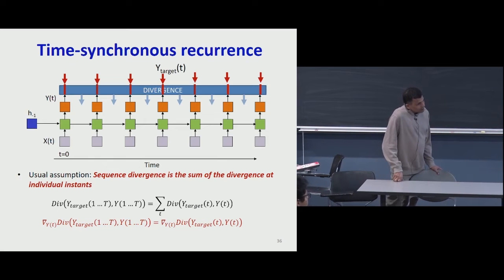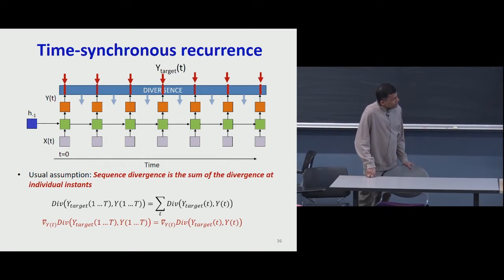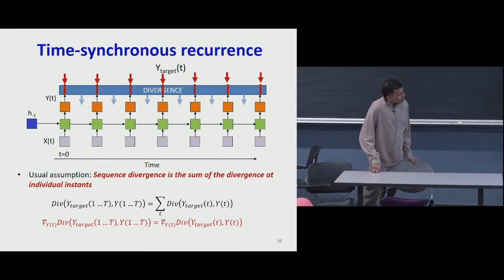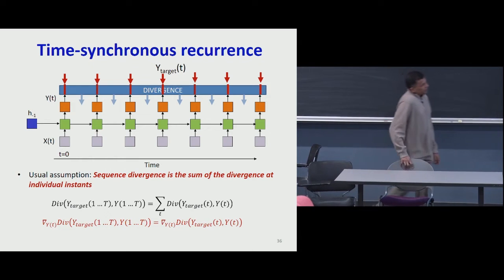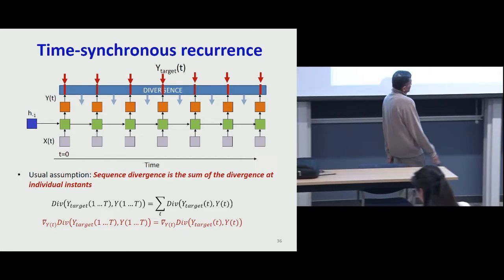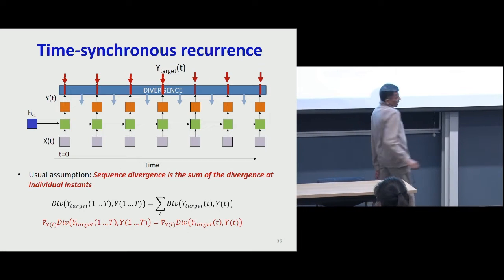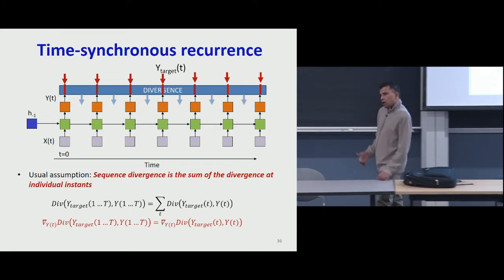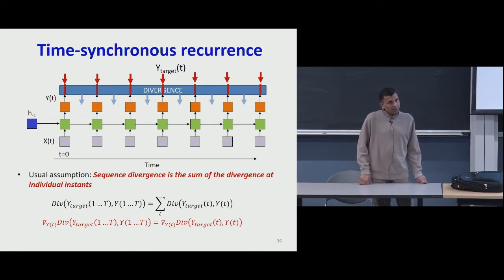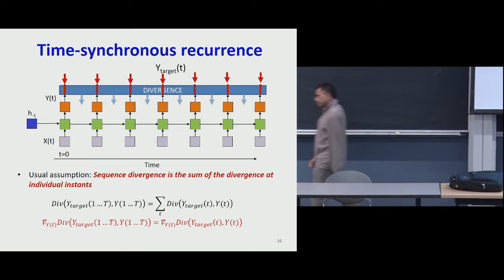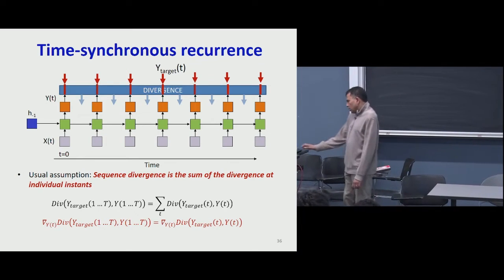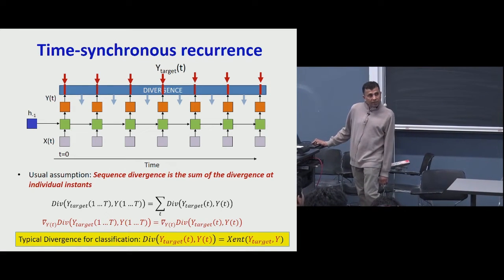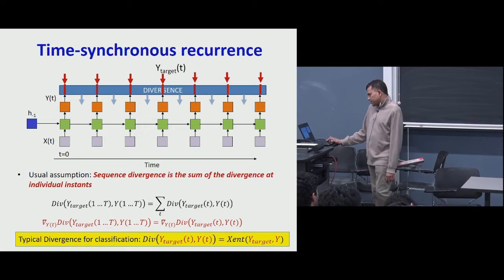The most common assumption we make is that the divergence is actually the sum of the divergences at individual times. If you make this simplifying assumption, then the computation of the derivative of the divergence with respect to outputs at individual times becomes simple — you just compute each of these derivatives individually and don't have to consider the other outputs. The typical divergence for these scenarios, if you are performing classification, is the cross-entropy divergence.